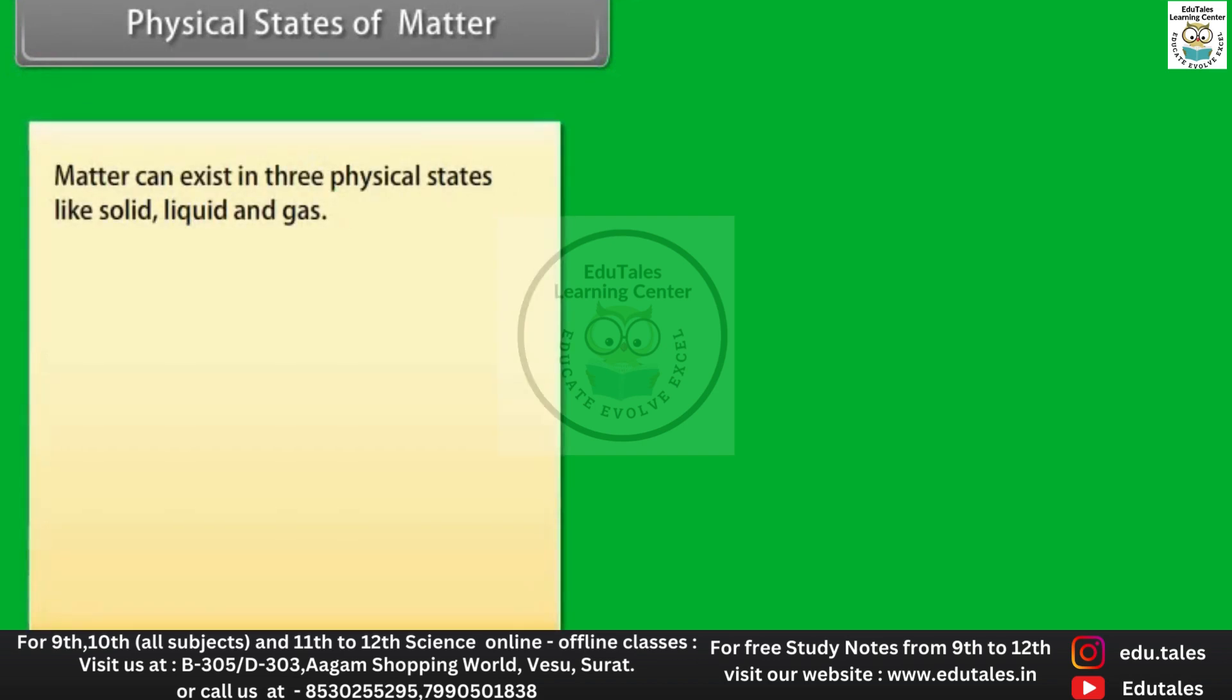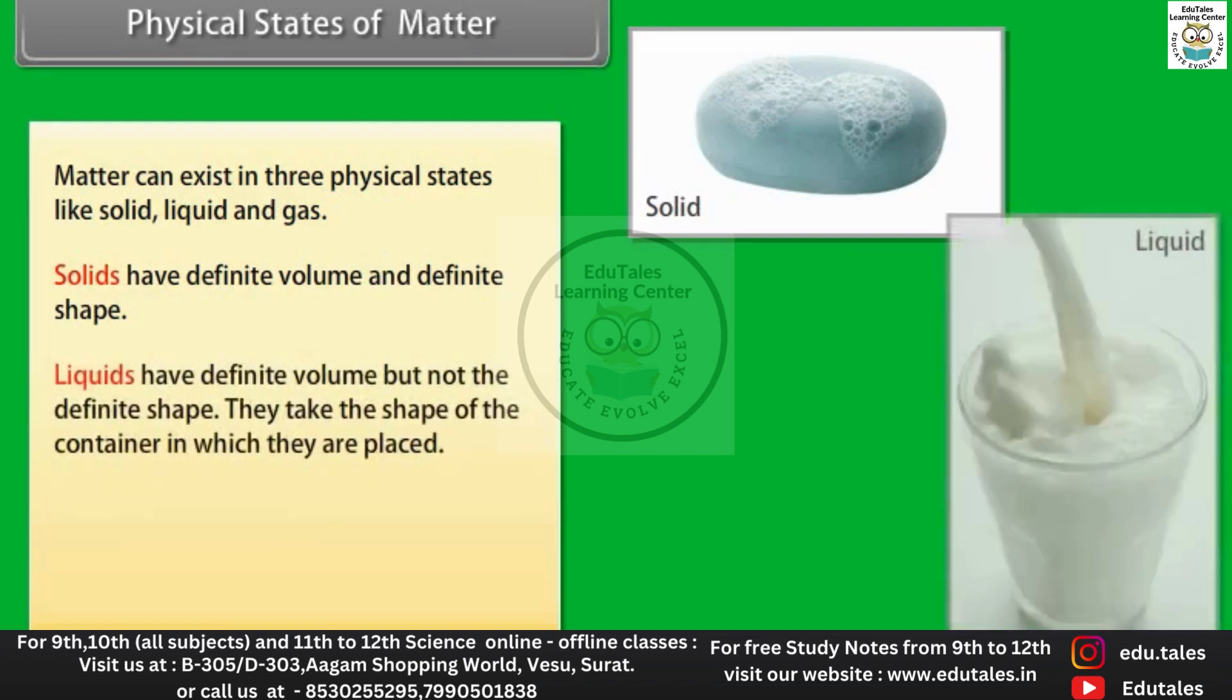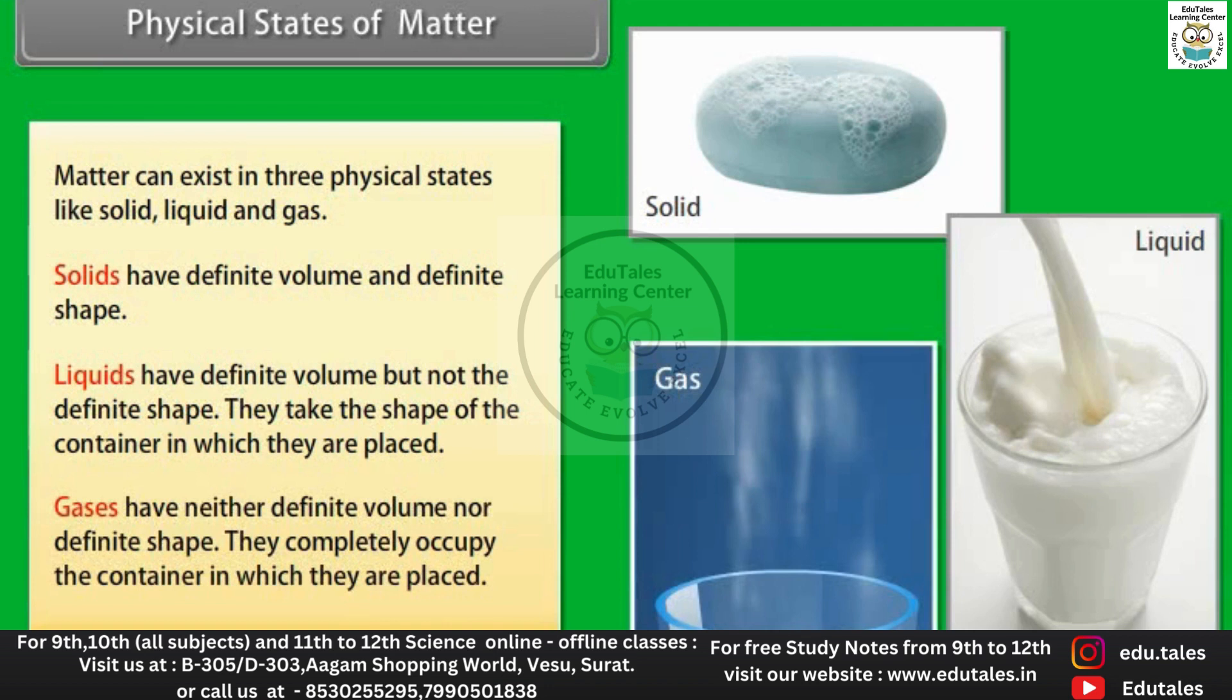Matter can exist in three physical states like solid, liquid and gas. Solids have definite volume and definite shape. Liquids have definite volume but not the definite shape. They take the shape of the container in which they are placed. Gases have neither definite volume nor definite shape. They completely occupy the container in which they are placed.